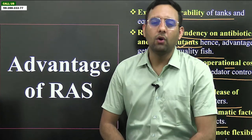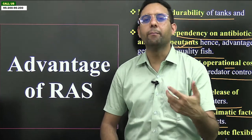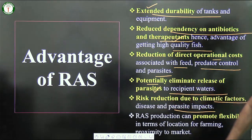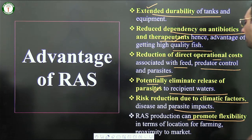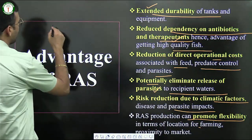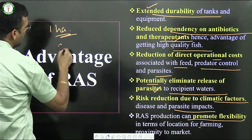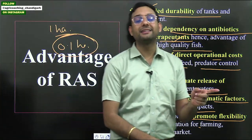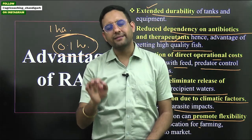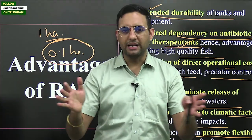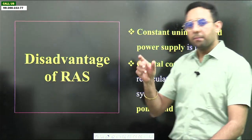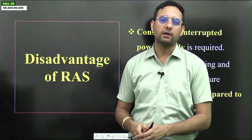Fourth, it potentially eliminates release of parasites to recipient water bodies. Fifth, risk reduction due to climatic factors, disease, and parasite impact — because it's a controlled closed environment with fewer variables. Sixth, RAS promotes flexibility in terms of farming location and proximity to market — getting 0.1 hectare near a city is far easier than obtaining one hectare, so RAS allows urban or peri-urban fish farming.